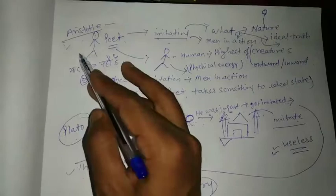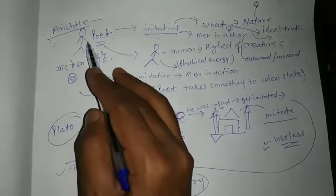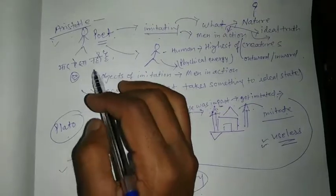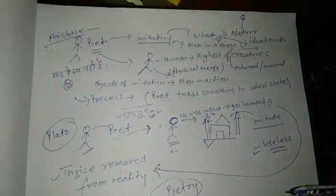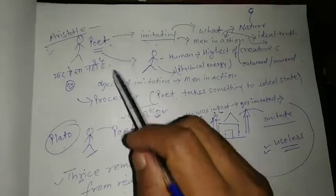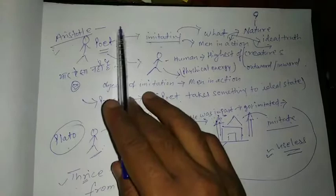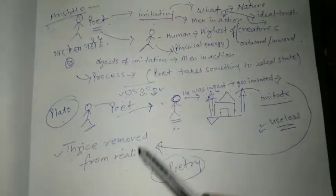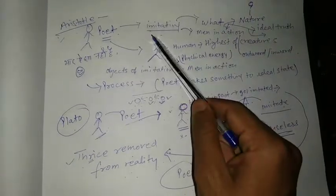Now comes the turn of Aristotle. Aristotle says, okay, this is not truth about poetry. Poetry is useful for people because what happens? What actually poet imitates? He clarifies or you can say he defends poetry with his theory of imitation.